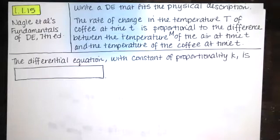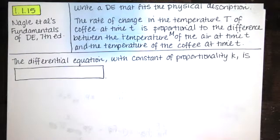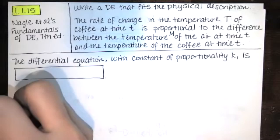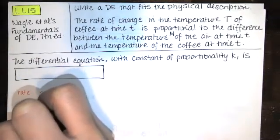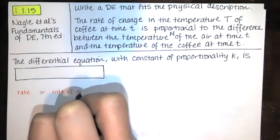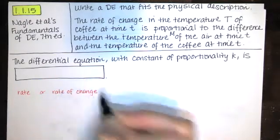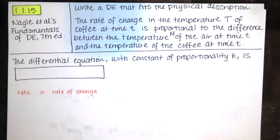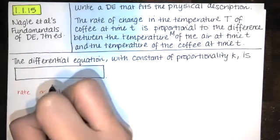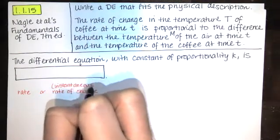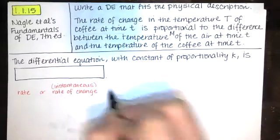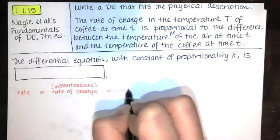One thing I'll tell all my students is that whenever you have a word problem and you need to translate it into a differential equation, whenever you see references to rate of change, in the absence of context, we will assume that is an instantaneous rate of change of some variable with respect to some other variable. So that's going to be a derivative.